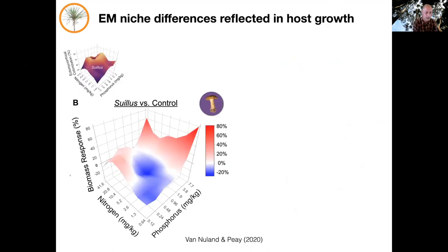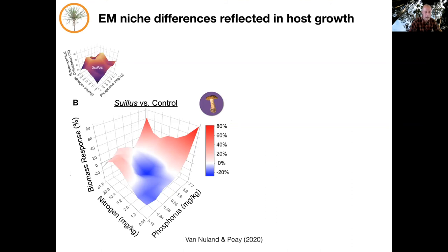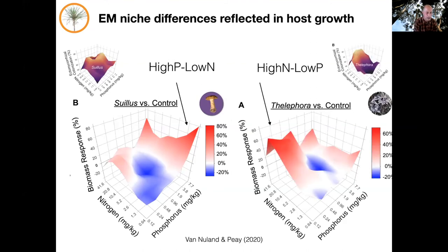I want to turn now to the plant side and think about how this resource specialization from the fungi affects host plant growth. This figure compares plant biomass between control non-mycorrhizal plants and colonized plants. Warm colors show where the fungus improves plant growth or expands the plant niche; cool colors show where it contracts or reduces plant growth relative to the control. For Suellis, plant biomass is most improved at the top right, where phosphorus is abundant but nitrogen is limiting. This reflects what we saw with the Suellis colonization data. For Thelephora, we see the opposite pattern: it maximizes plant growth when nitrogen is plentiful and phosphorus is limiting.